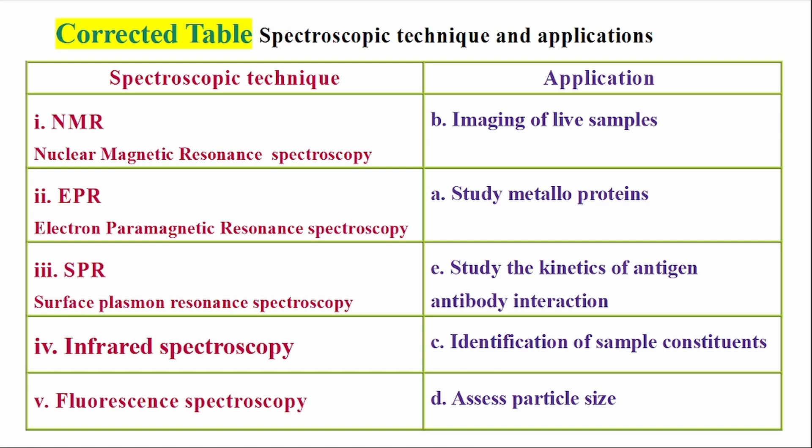To recap: NMR stands for Nuclear Magnetic Resonance Spectroscopy, application is imaging of live samples. EPR stands for Electron Paramagnetic Resonance Spectroscopy, application is study of metalloproteins. SPR stands for Surface Plasmon Resonance Spectroscopy, application is study of kinetics of antigen-antibody interaction. Infrared Spectroscopy is used for identification of sample constituents. Fluorescent Spectroscopy is used to assess particle size.